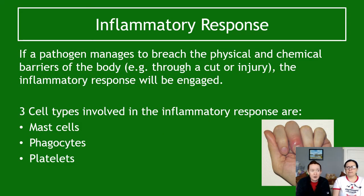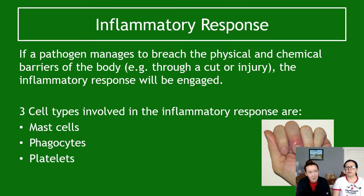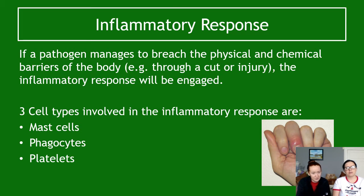The main part of this topic — the bit that's probably not as obvious — is the inflammatory response, which you will see in your own body whenever you get hurt. If a pathogen manages to get past your physical and chemical barriers — your epithelial cells, mucus, tears, and so on — the inflammatory response is what happens next. There are three main cells involved: mast cells, which you probably haven't heard of; phagocytes, which you know from National 5; and platelets.